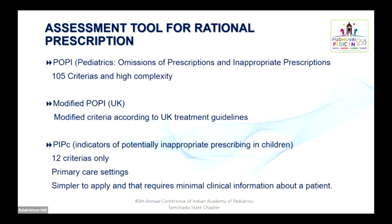There are a few assessment tools available to assess the rationality of the prescription, namely POPI, modified POPI, and PIP. POPI stands for Pediatrics, Omissions of Prescriptions and Inappropriate Prescriptions — it contains 105 criteria and is quite complex, so we cannot use this in our setup. It was subsequently modified by UK treatment guidelines. The ideal tool we can use is PIP: indicators of potentially inappropriate prescribing in children. It is useful in primary care settings and consists of only 12 criteria, is simpler to apply, and requires minimal clinical information about the patient.